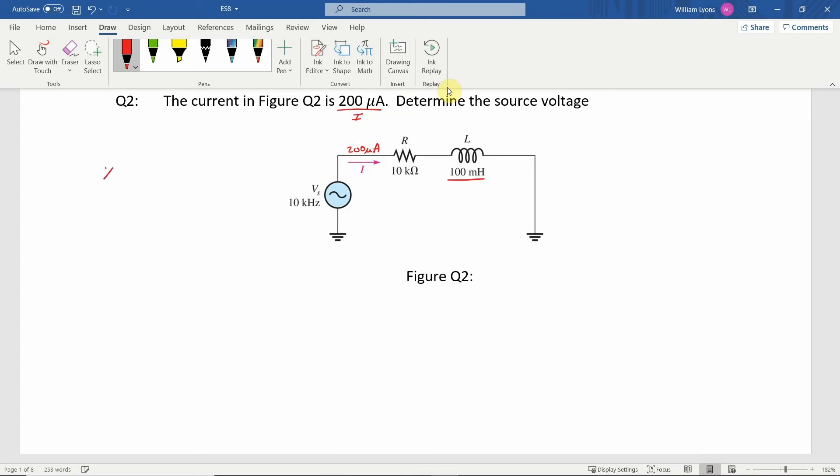So what we have to do is calculate XL. XL is 2 pi frequency L, which equals 2 times pi, a frequency of 10 kilohertz, and an inductance of 100 millihenries.